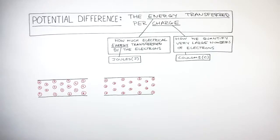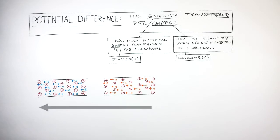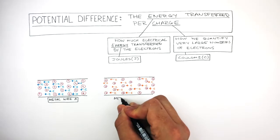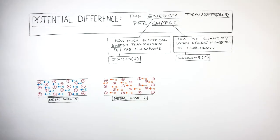Here is a close-up of two metal wires. The red circles with crosses represent the positive metal cations. In both metal wires, there is a flow of charge to the left. The electrons are transferring electrical energy as they flow. The flow of charge in metal wire A is transferring less energy, represented by the electrons having a blue colour.